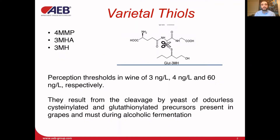Thiols such as 4MMP and 3MH come bound to cysteine and glutathione. To become powerful volatile compounds, Saccharomyces cerevisiae yeast need to release them from the odorless precursor present in grape must during alcoholic fermentation, by the production of an enzyme called beta-lyase.